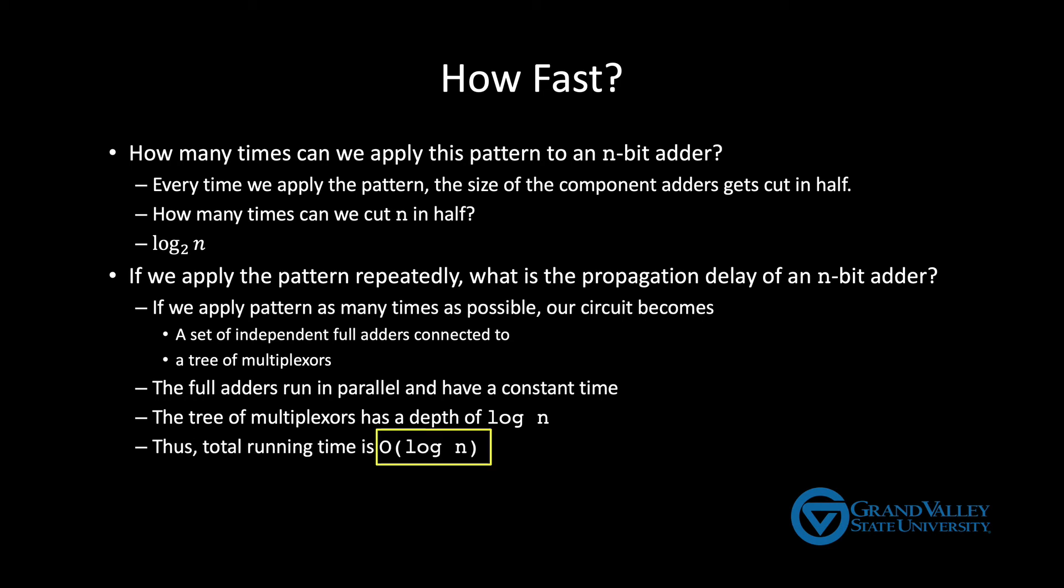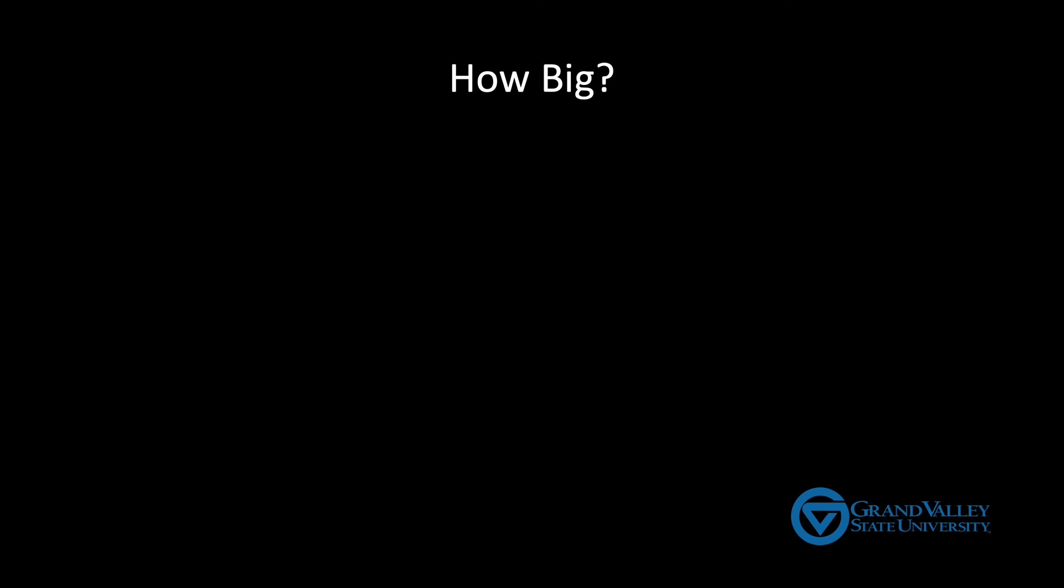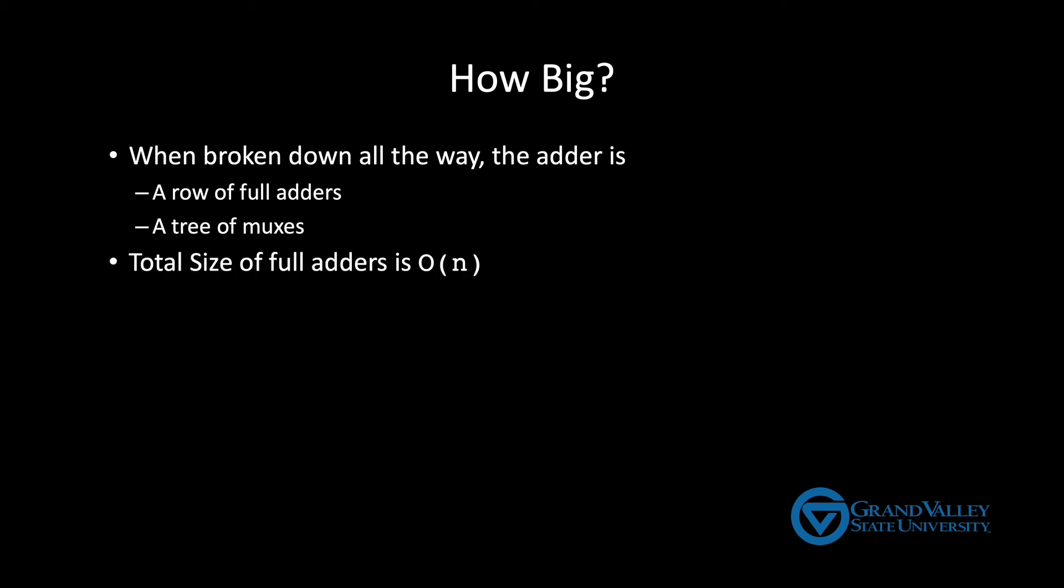Now of course the next question is, how big is it? So again we view this adder as a row of full adders and a tree of MUXs. And again each adder has a constant size, but there's one for each pair of input bits. So that gives us a total size for the full adders that's linear. The next thing to realize is that the size of each N bit MUX is also linear in N. An N bit 2 to 1 MUX is just N 1 bit MUXs and each 1 bit MUX has a constant size.